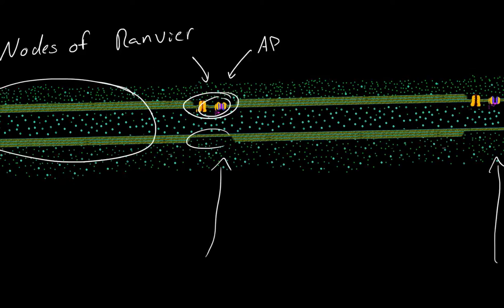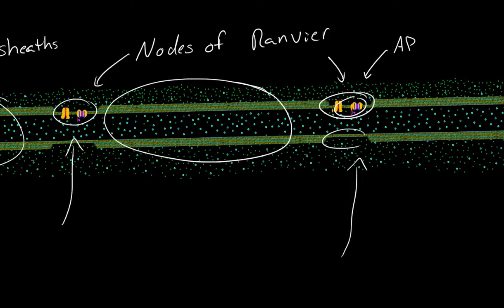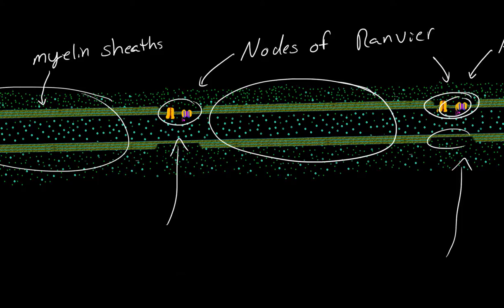So that is what the myelin sheaths are and the nodes of Ranvier are. They are just, myelin sheaths are just membranes wrapped around membranes. Usually it's another cell that comes around and wraps around the axon.